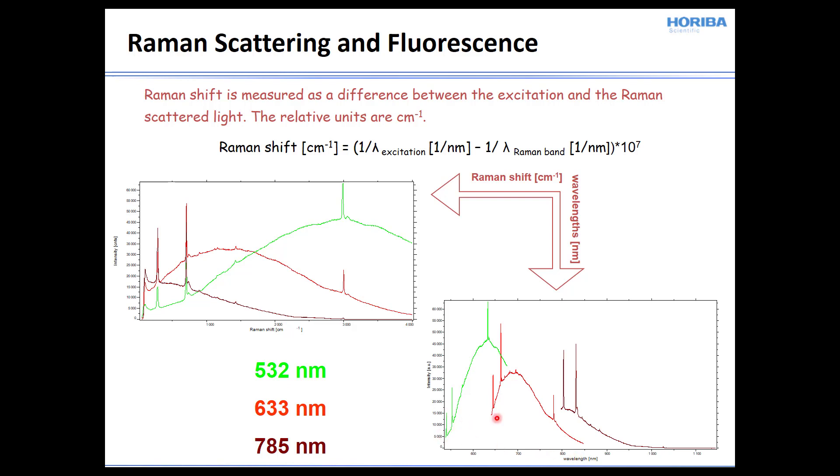So here are our Raman bands, which appear at different absolute wavelengths, which they should, because they're all shifted relative to the absolute wavelength of the laser light. And what we see is that laser excitation is being absorbed, and there is a subsequent emission. And so you see the fluorescence background extending through all of these three spectra. And so as you move to longer excitation wavelength, you're moving away from the excitation or absorption manifold and getting less and less fluorescence or emission in your Raman spectrum.